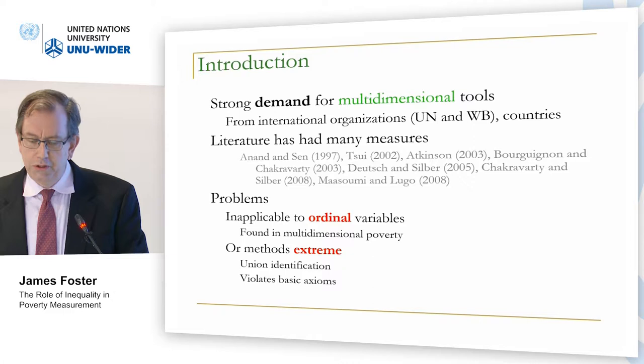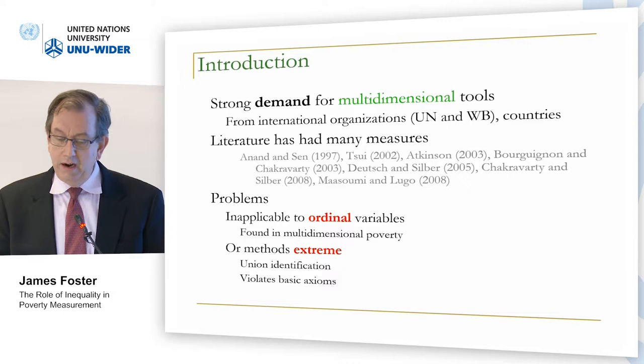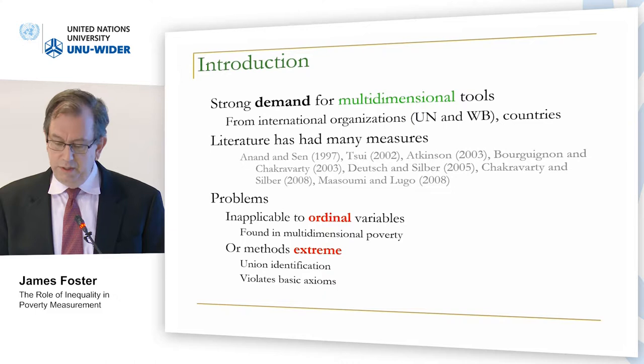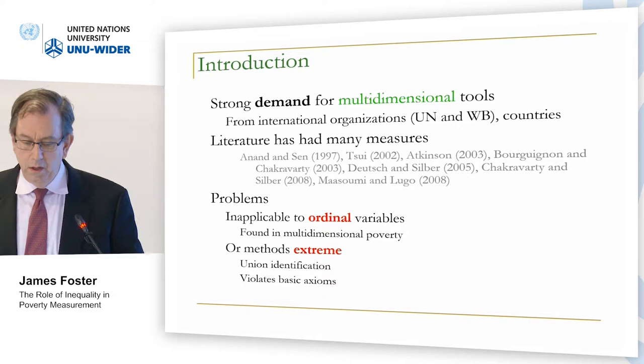The literature has led to a whole lot of measures. Unfortunately, most measures are inapplicable to ordinal variables — variables that don't have a natural measuring rod, just a number attached to keep track of the place — and these are found very often in multidimensional poverty measurement. Or the methods can be quite extreme, such as union identification, which says if you're deprived in anything you're considered poor. Or they violate basic axioms, such as the headcount ratio violating dimensional monotonicity.